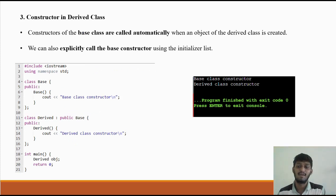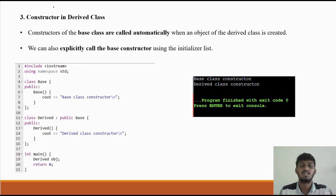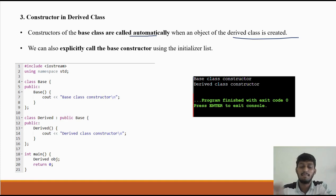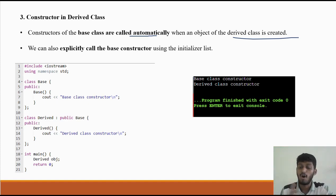Now let's look at constructors in the derived class. When we have types of inheritance and we create an object of the derived class, the constructor of the base class is called automatically. In single inheritance, when one class is created from another, both constructors are invoked.